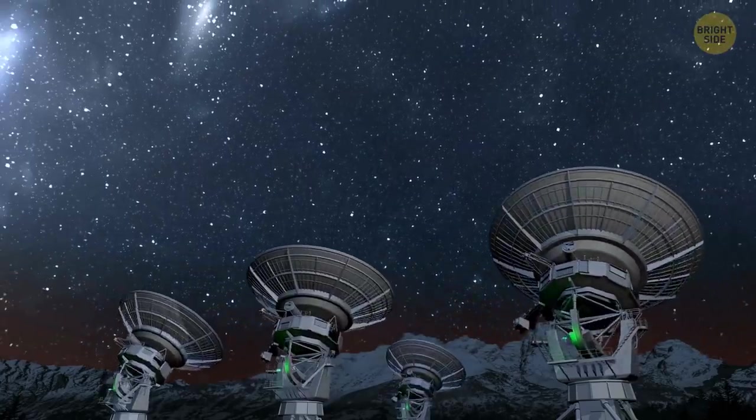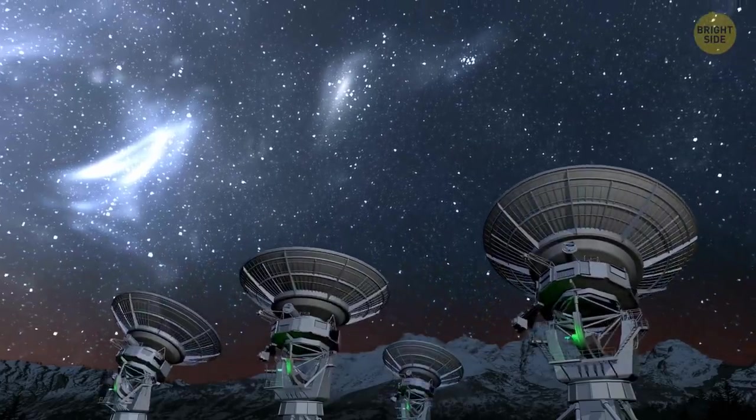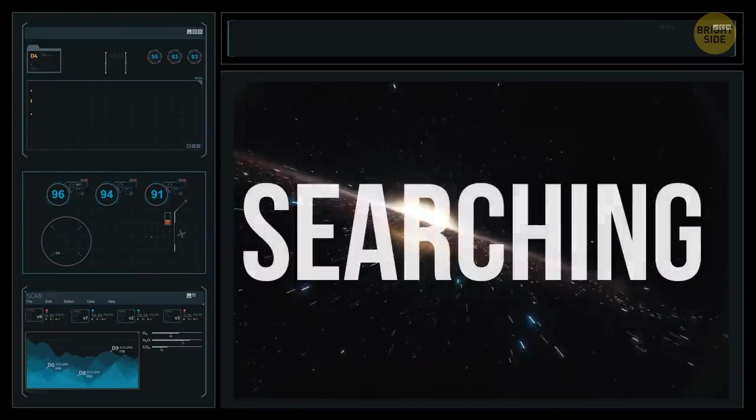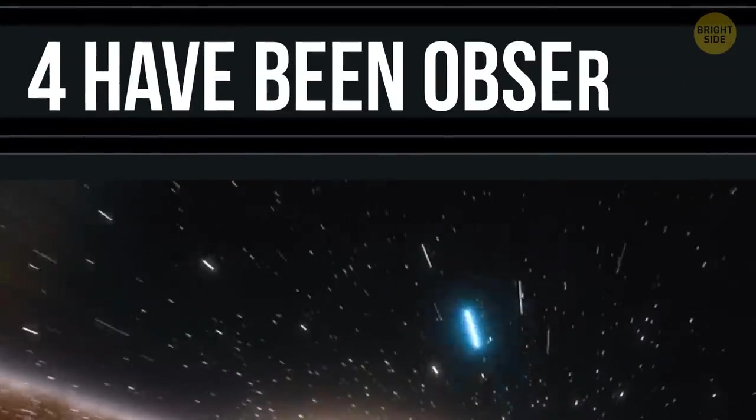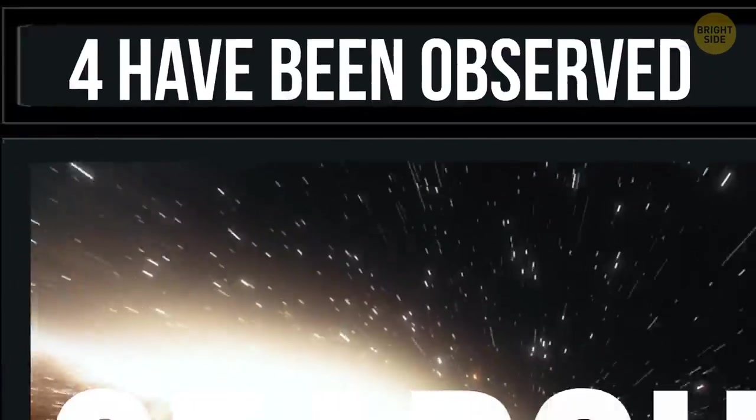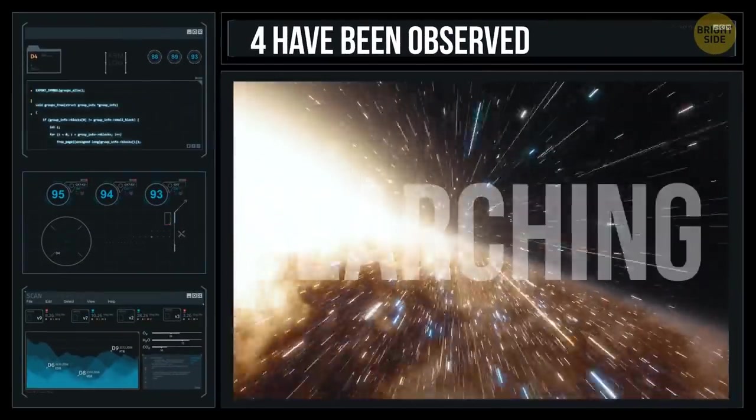Scientists have refuted the theory that these circles are normal radio emissions that are commonly observed in space. There is still no explanation for what these vast astronomical objects are. Only four have been observed since the first discovery in 2019, so it's likely that the mystery will take many years to solve.